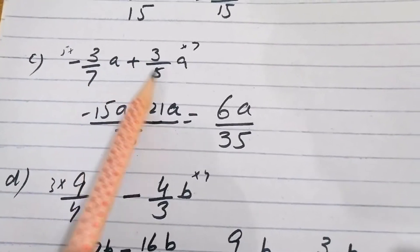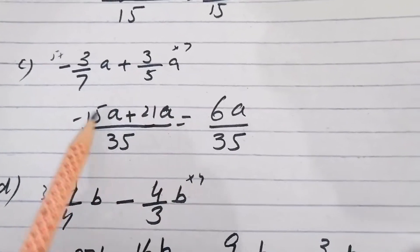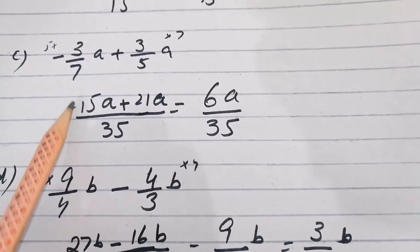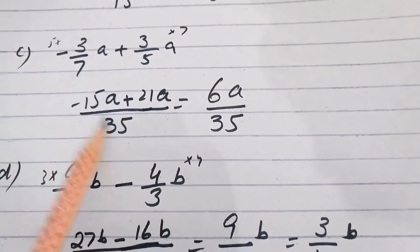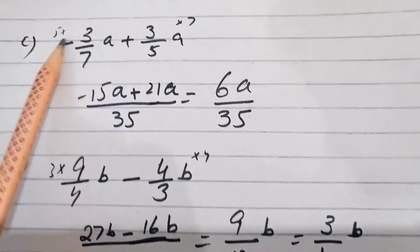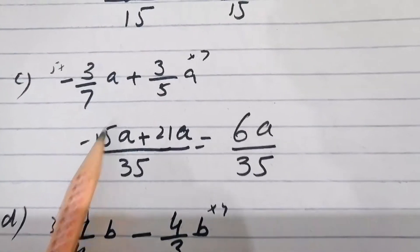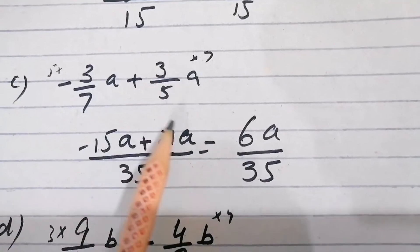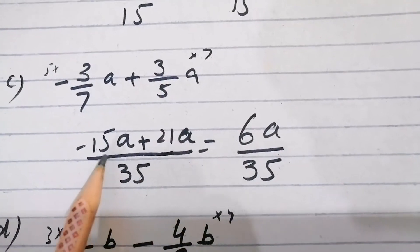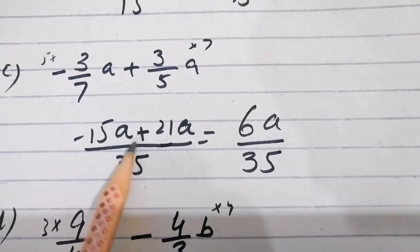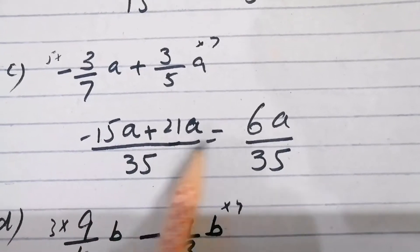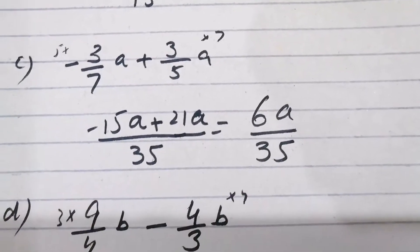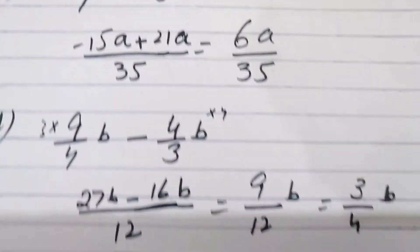Part c: -3/7a + 3/5a. Taking LCM of 7 and 5, which is 35. Multiplying: -3 × 5 = -15 over 35, and 3 × 7 = 21 over 35. So -15 + 21 = 6, giving 6a/35 as the answer.